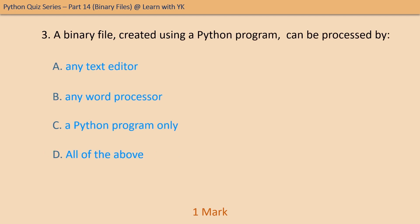Question number three: a binary file created using a Python program can be processed by — pick the correct option. It can be processed by any text editor, any word processor, a Python program only, or all of the above. The correct option is option C — it can be processed only by a Python program.